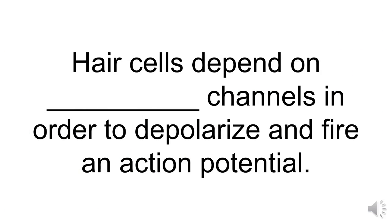Hair cells depend on blank channels in order to depolarize and fire an action potential. So these are the hair cells in the inner ear. And obviously when they fire an action potential, that means we're turning sound vibrations into something that our brains can receive, perceive. So what type of channels begin this cascade? I'll give you a moment.